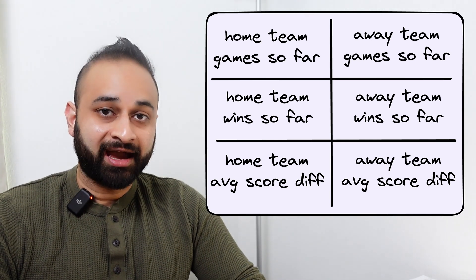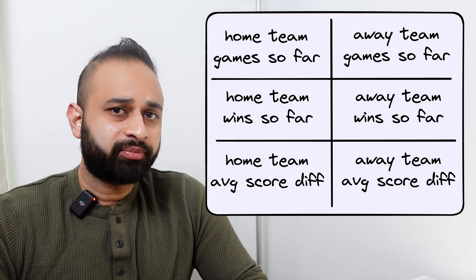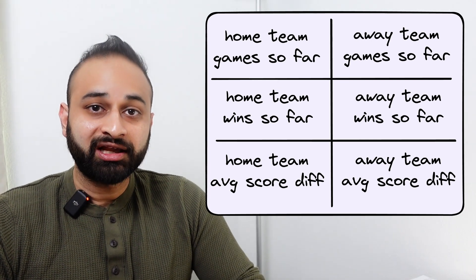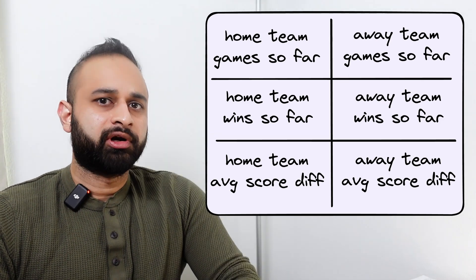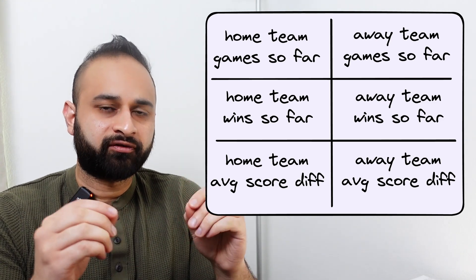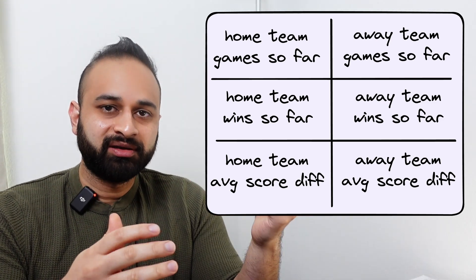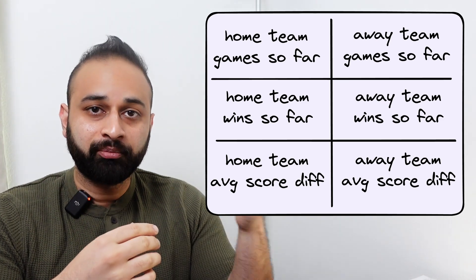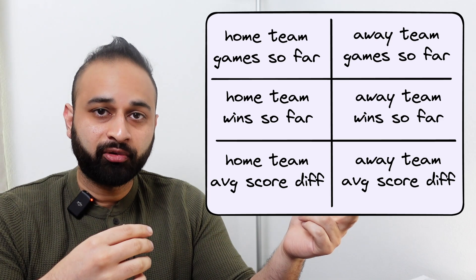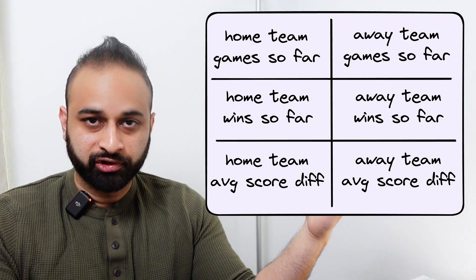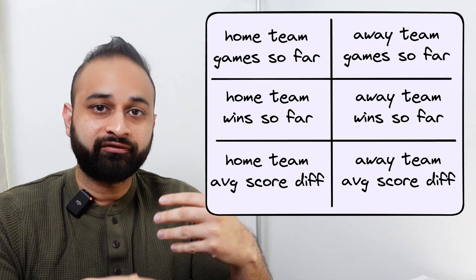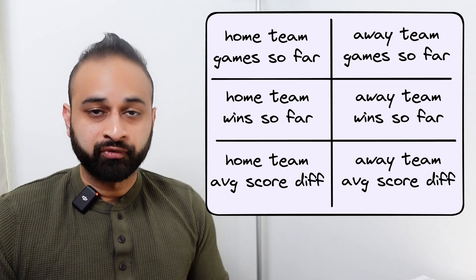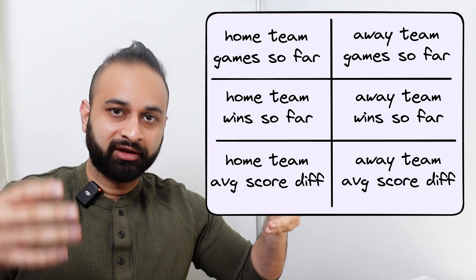The next one is how many wins they have so far this season. I expect this one to be a pretty predictive feature because simply put, if a team is winning more and more of their games, that makes it more likely they're going to win their next game. The last feature, also predicted to be helpful, is the average score differential between that team and the opponents they've played so far. For example, if a team has played three games, won by one point, lost the next by one point, and won the third by three points, the average is three divided by number of games — an average score differential of plus one point. We have six features total: those three features replicated for the home team and then the away team.